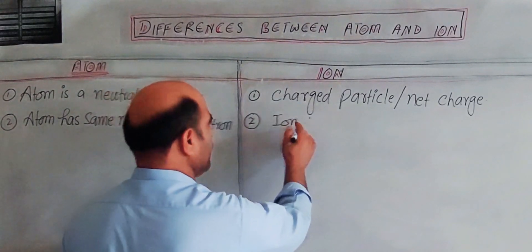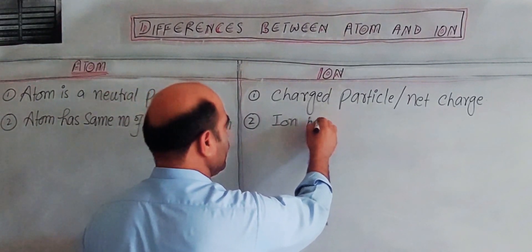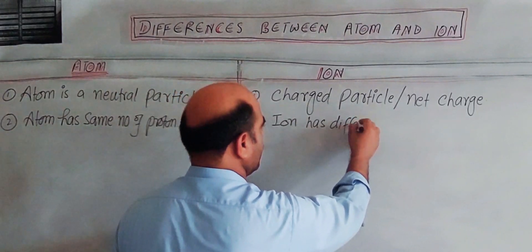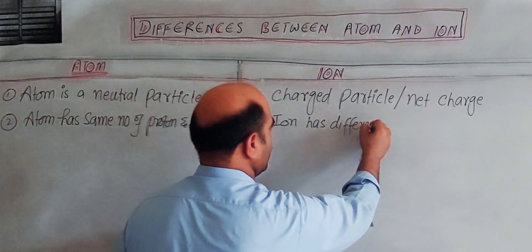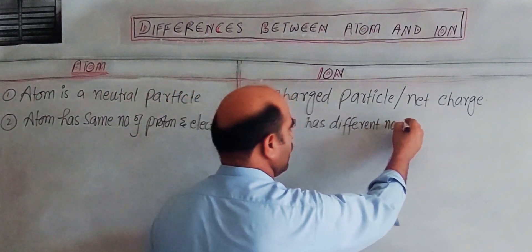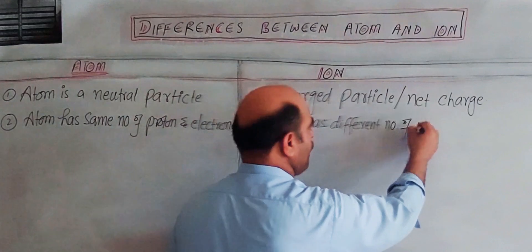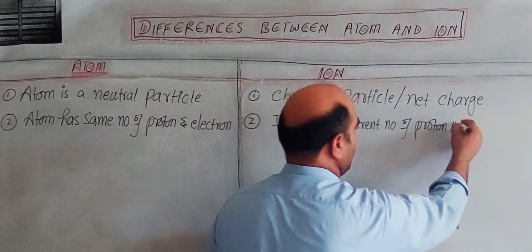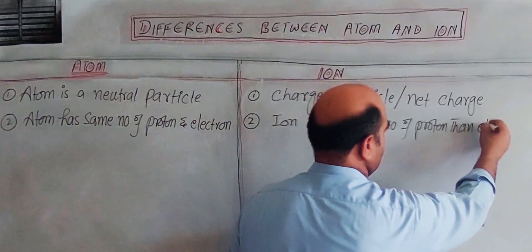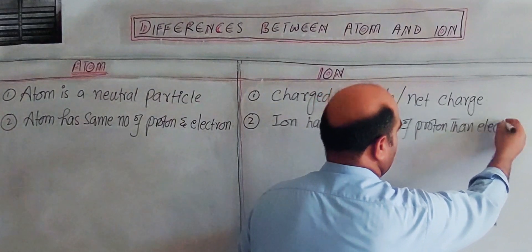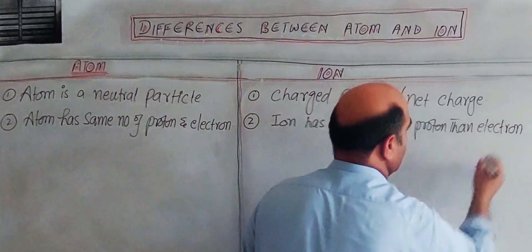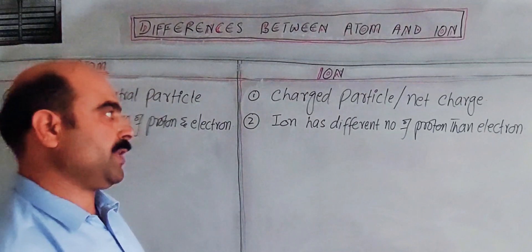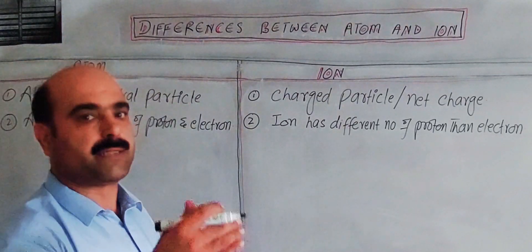In an ion, the number of protons is different from the number of electrons. This imbalance between protons and electrons is what gives the ion its net charge.